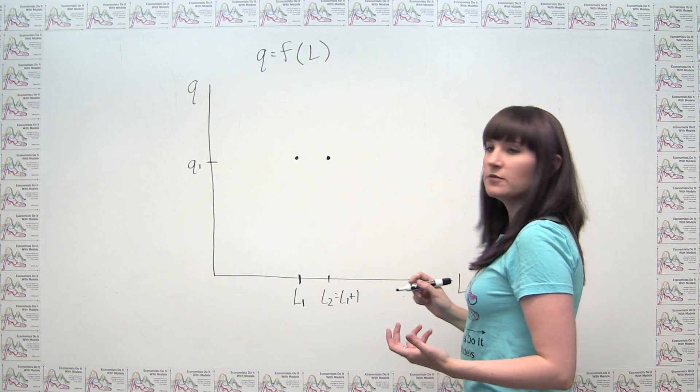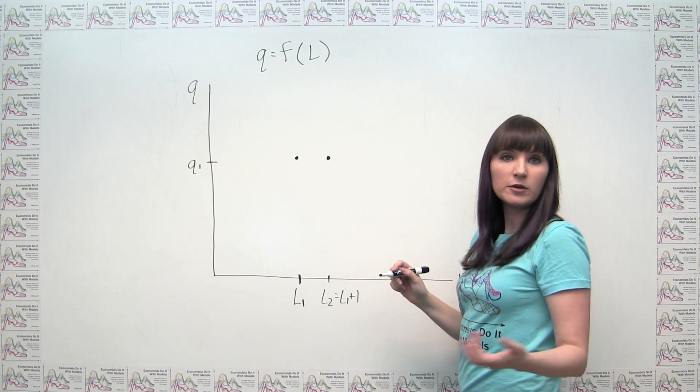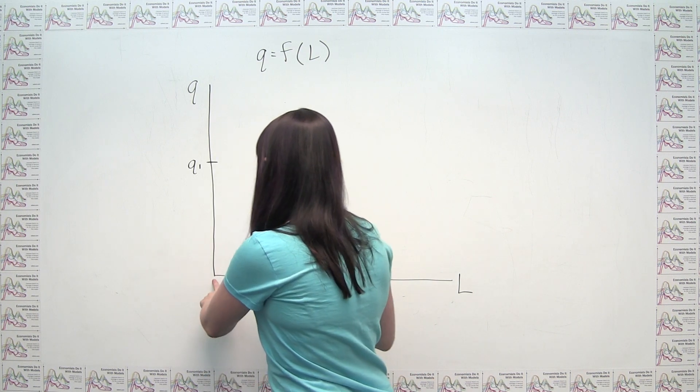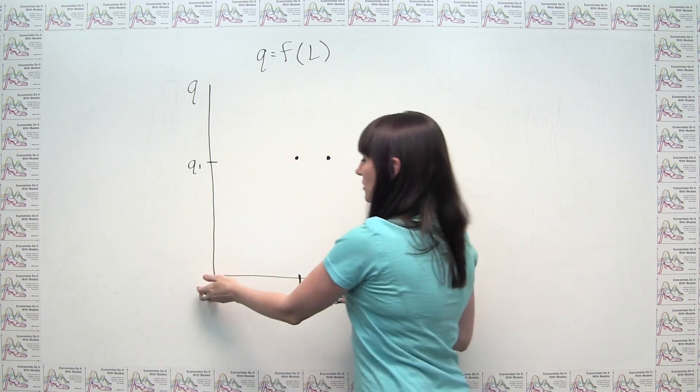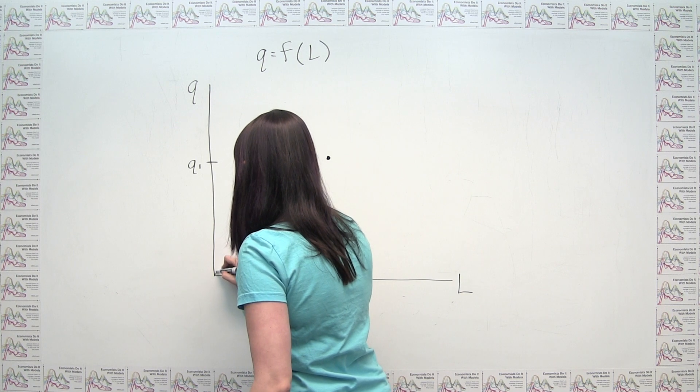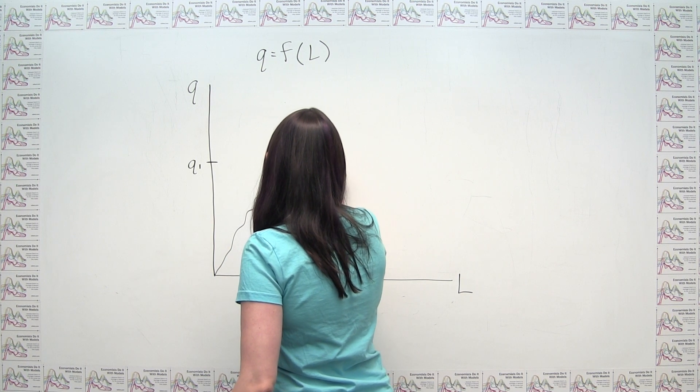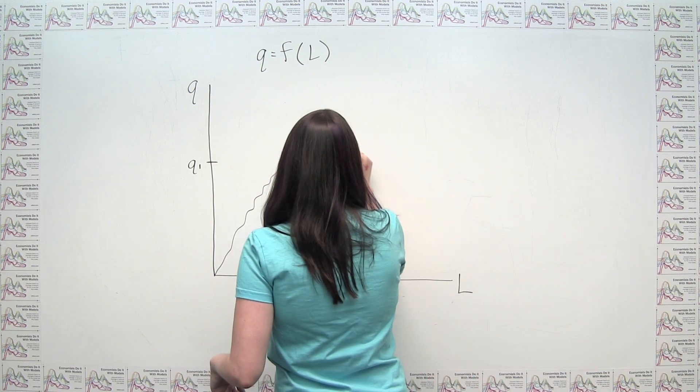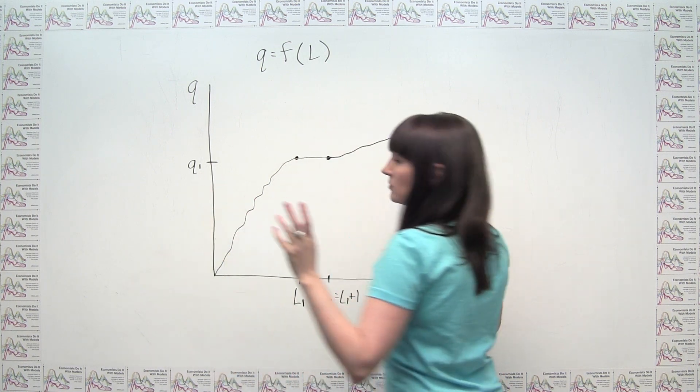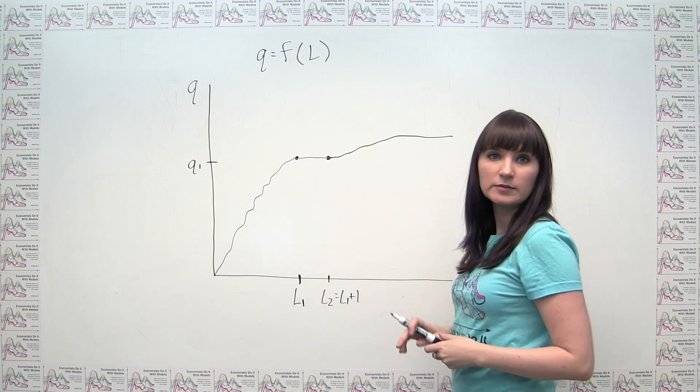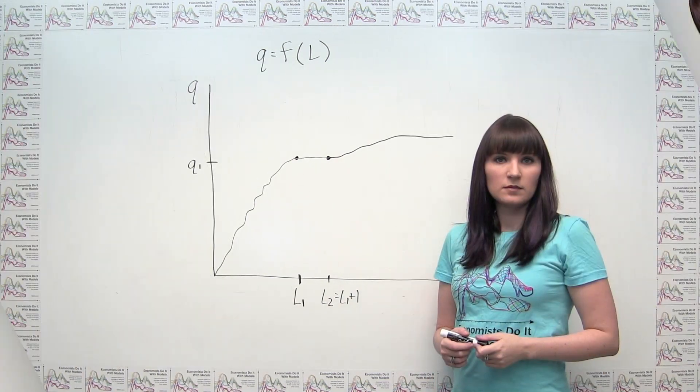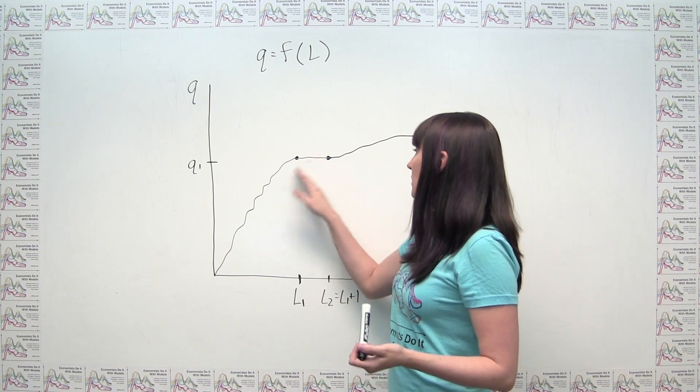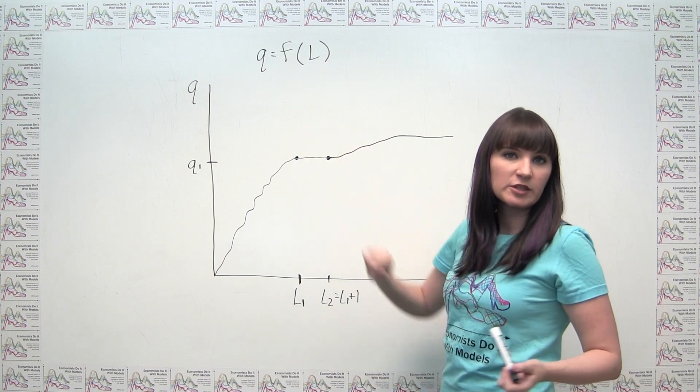Our production function obviously would have to go through these two points. So we don't know what else it would look like. We generally think that if there's no labor, there's no output, so generally it starts at the origin. But it could be doing something weird. All we know is that this is going horizontally like this, right? And then it could be doing something like this. Who knows? But we're only concerned about these points here.